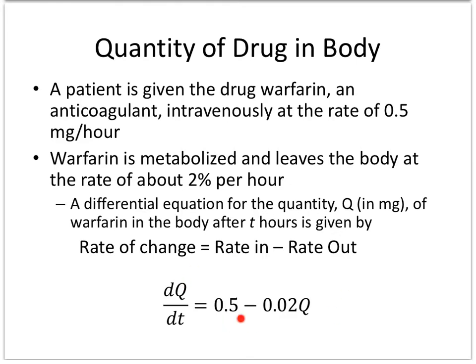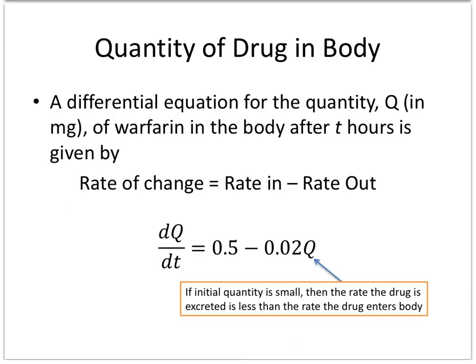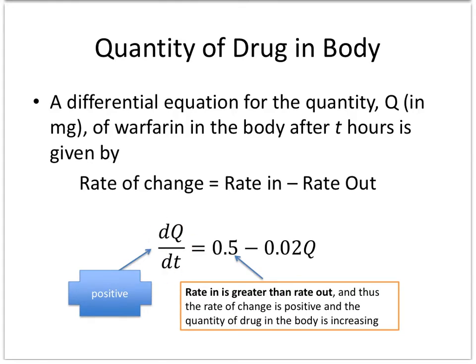Remember, a lot of students don't like these because there's no T. If I work backwards and get my general solution, that has the T because my quantity here is a function of T. And so of course if the initial quantity, Q is how much is in the blood, if this is small, then the rate the drug is excreted is less than the rate entering the body, meaning this would be a positive value. In other words, if this is greater than the rate out, then the rate of change is going to be positive and the quantity of the drug in the body is increasing.